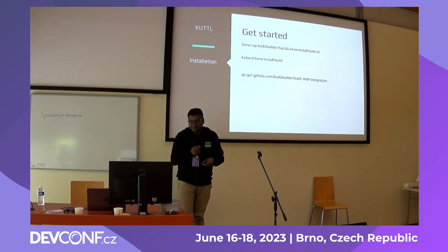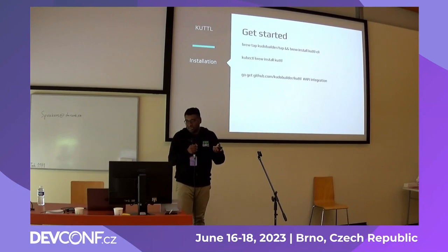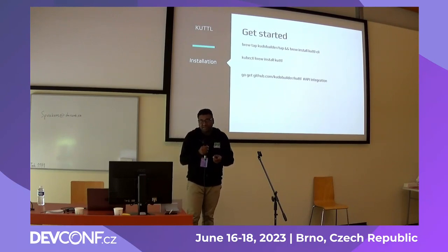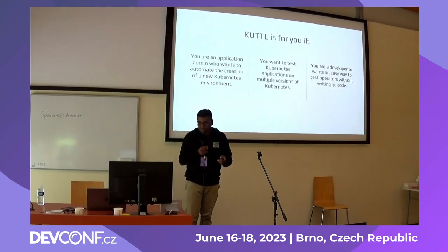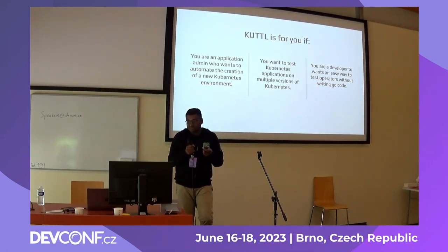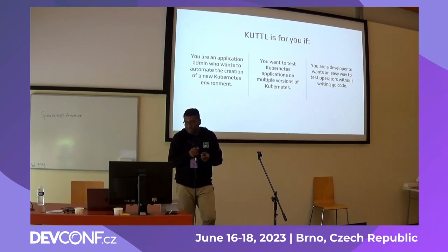To install Cuttle on Mac, use: brew tab kudo-builder/tap, then brew install cuttle-cli. On Linux, use: kubectl crew install cuttle. Cuttle also provides API integration for Go developers: go get github.com/kudo-builder/cuttle. It's useful for testing Kubernetes operators specific code and for testing Kubernetes applications on different versions.